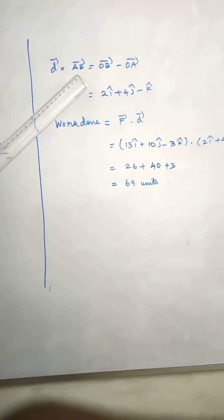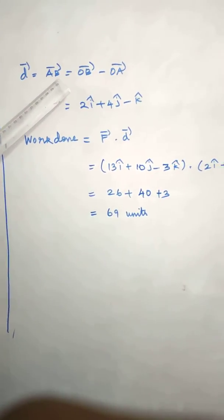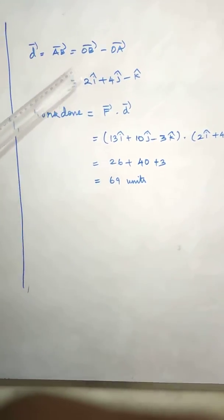D vector is equal to formula AB vector. AB vector is OB vector minus OA vector, so let us subtract.